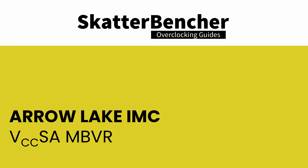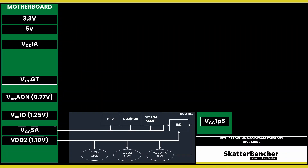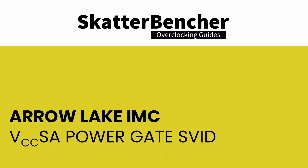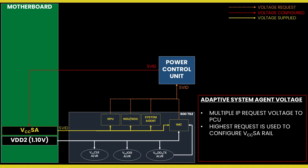The external VCCSA motherboard VR powers a number of parts on the SOC tile, including the memory controller. Unlike for the compute IP, the parts of the SOC tile are not powered using DLVR, so the power delivery is identical to previous architectures. The voltage configuration of the VCCSA voltage rail is rather complicated. Since multiple IP domains share the voltage rail, the VCCSA voltage is set based on the highest requested voltage from the various connected IP blocks. The MEMSS can dynamically request an operating voltage from the VCCSA voltage rail using the ISFIT protocol.